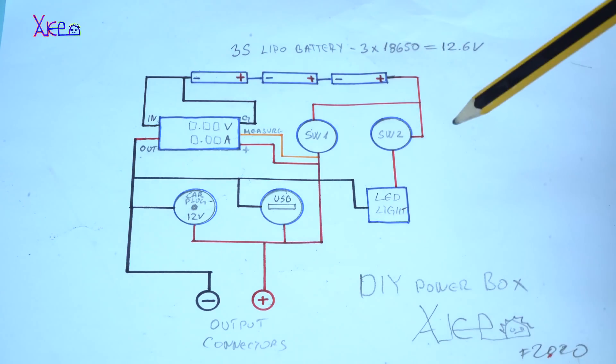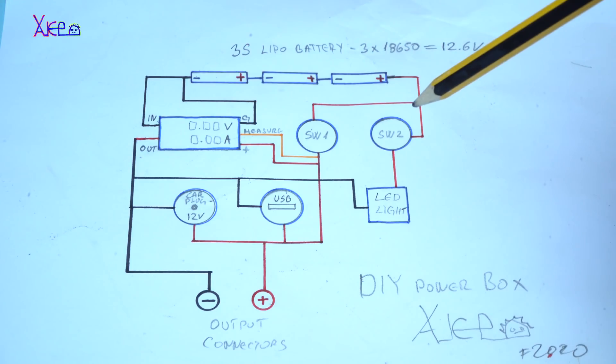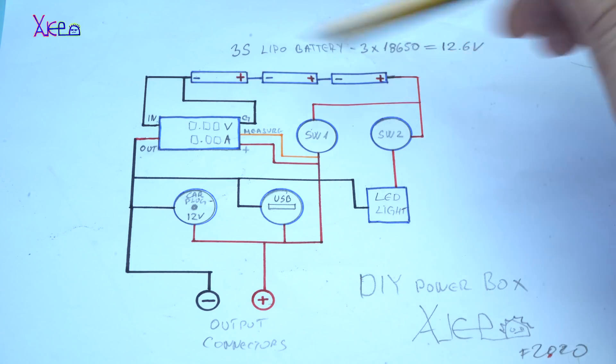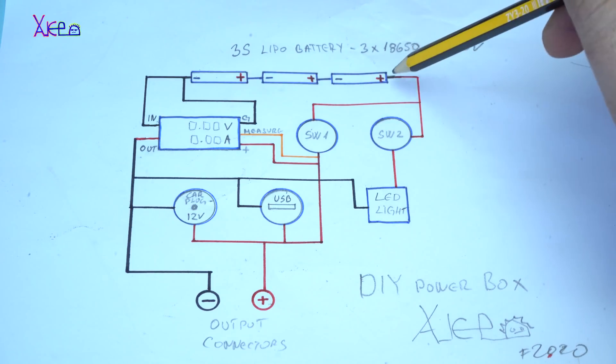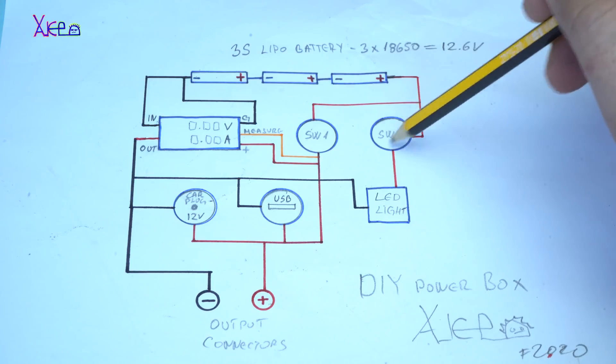Here is the circuit diagram of wiring the DIY power box and I'm going to explain the simple things. The battery pack consists of three 18650 batteries and when they are fully charged that will make 12.6 volts. The positive wire will go to the main switch, and also the positive will go into the switch that will turn on the LED light of the box.